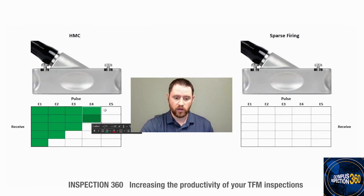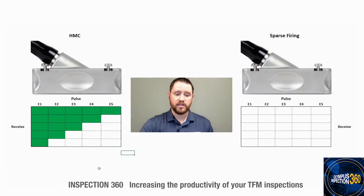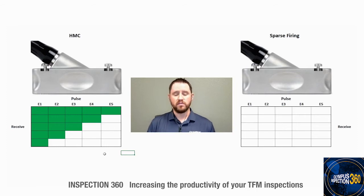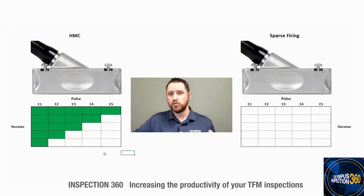This half matrix process works fairly well when you are attempting to send raw data to another device. But in an instrument like the X3, where we are summating all of the data through the hardware of the unit, a better way to improve inspection speeds is — instead of reducing the amount of received elements — to actually reduce the amount of pulsed elements. So in the sparse firing technique, we can program the instrument to fire every other element, every other two elements, or at certain intervals to speed up the process.